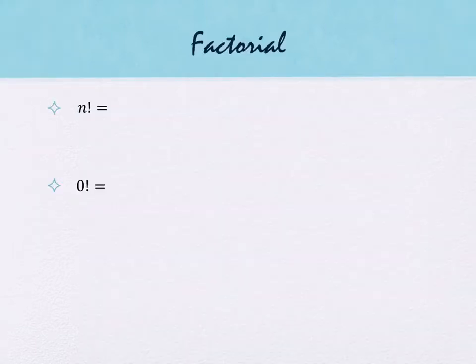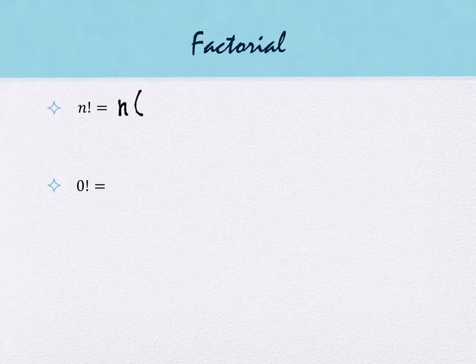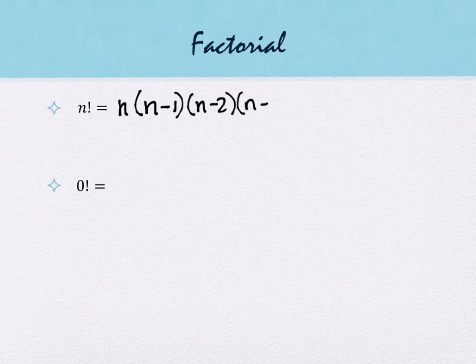We need a little bit of notation in order to do permutations and combinations — a notation called a factorial. It looks like an exclamation point, and your calculators probably even have one. What it really means is a multiplication statement. If you have n factorial, it means you take n and multiply by one less than n, and keep multiplying until you get down to one. It stops when you get to one.